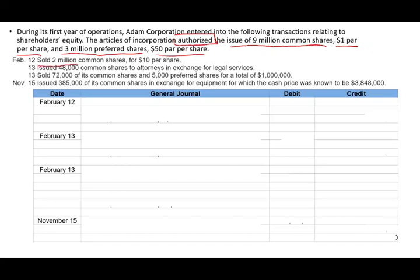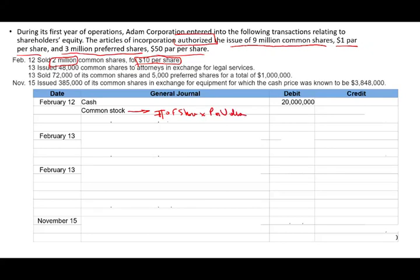February 12: sold 2 million common shares for $10 each. Whether the problem says 'sold' or 'issued,' it's basically the same thing. 2 million shares at $10 means we received $20 million cash, so we debit Cash $20 million. For the credit, we credit Common Stock for the number of shares times the par value: 2 million times $1 equals $2 million.